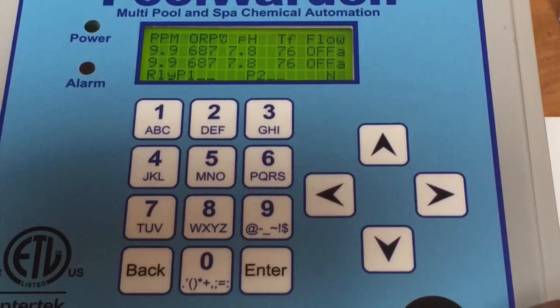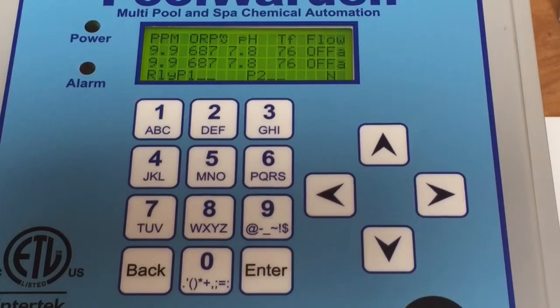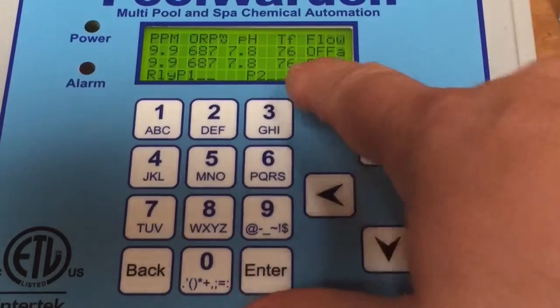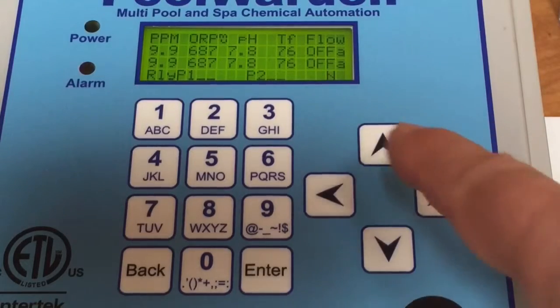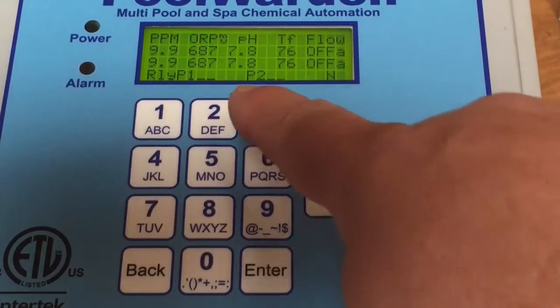And also at the bottom of the screen, it says relay pool one and then pool two over here. This will actually show you the status of the relays.